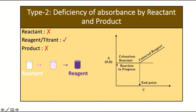Since the reactant is colorless and does not show absorbance, and the product also does not show absorbance, the absorbance value remains constant until the endpoint. After the endpoint, when all the reactant is utilized and product is obtained, the added reagent shows optical characteristics — it is colored — so there is an increase in the absorbance value shown in the graph.